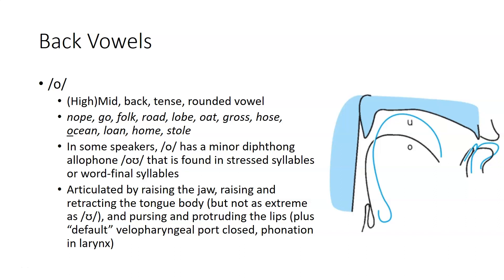O is articulated by raising the jaw, raising and retracting the tongue body, but not as much as for u or oo, pursing and protruding the lips, plus the usual closure of the nasal passage and phonation. In the image on the right, we have from x-ray tracing the distinction between oo and o, where both tongue raising and lip constriction are more extreme for oo than they are for o.